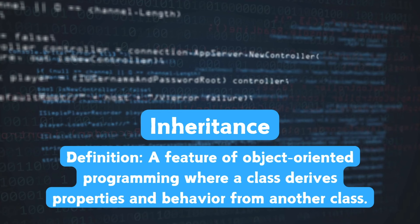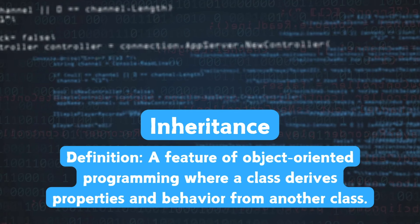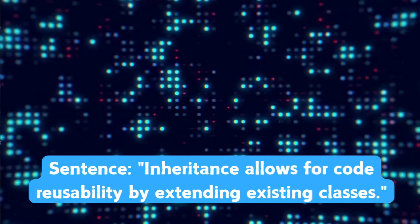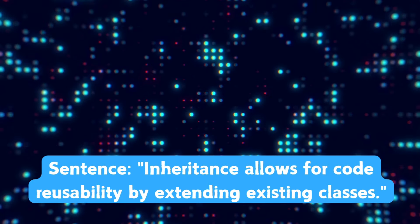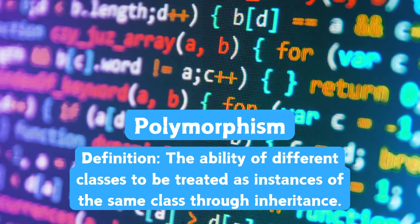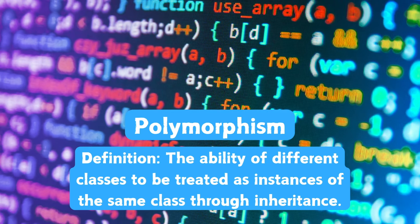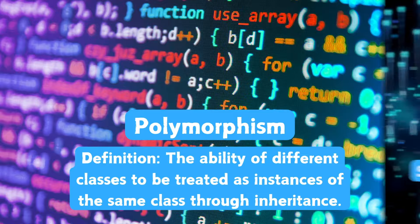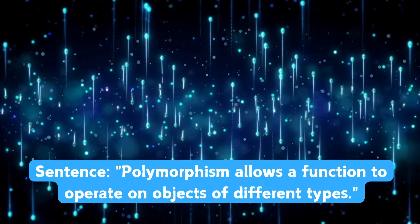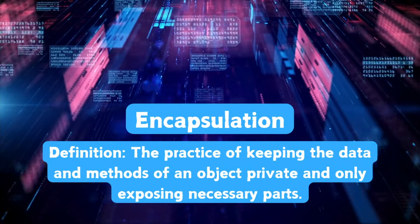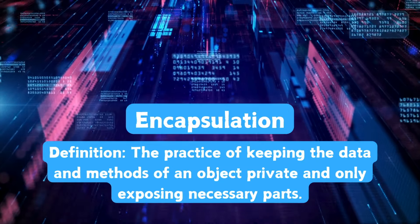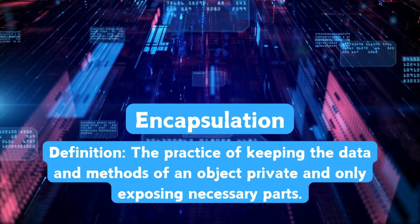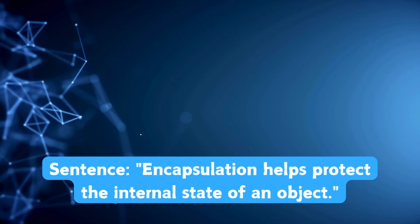Inheritance is a feature of Object-Oriented Programming where a class derives properties and behavior from another class. Inheritance allows for code reusability by extending existing classes. Polymorphism is the ability of different classes to be treated as instances of the same class through inheritance. Polymorphism allows a function to operate on objects of different types. Encapsulation is the practice of keeping the data and methods of an object private and only exposing necessary parts. Encapsulation helps protect the internal state of an object.